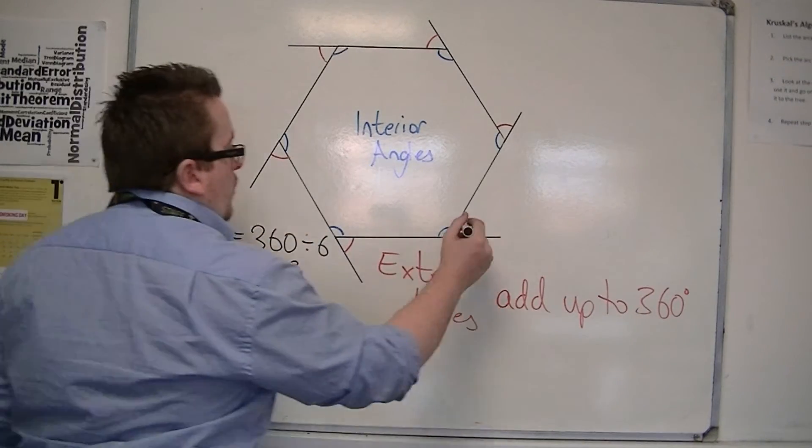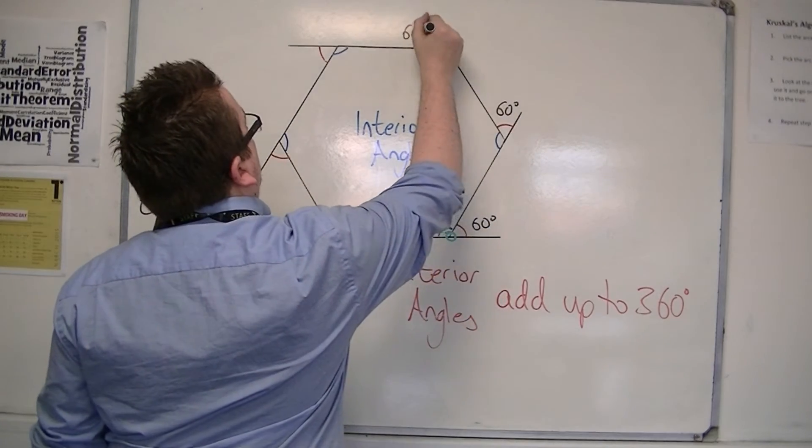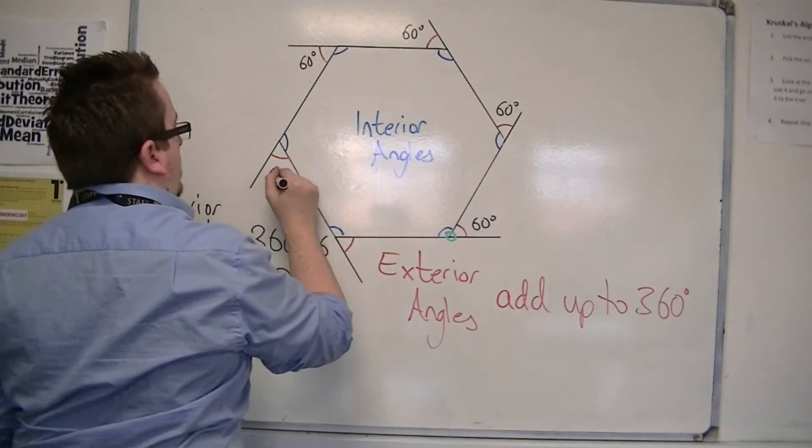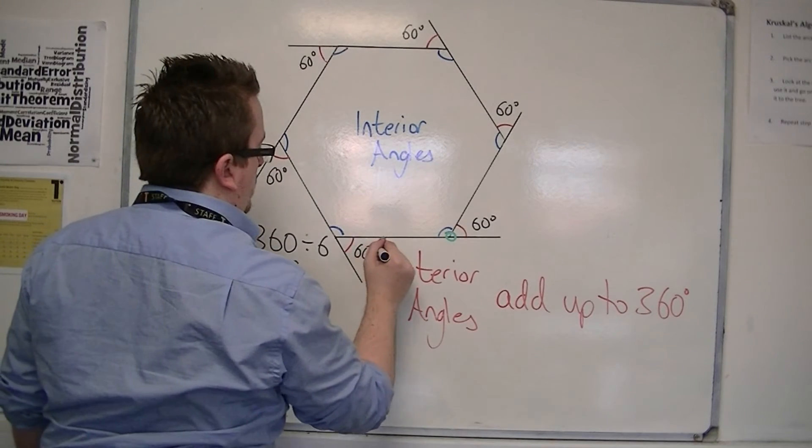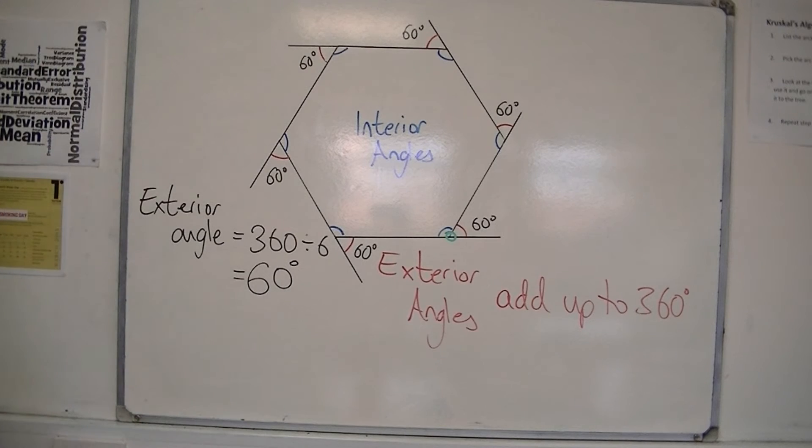So each one of those is 60 degrees. So that eventually, you get all the way back to 360 degrees, all the way back to where you start.